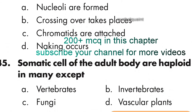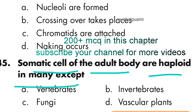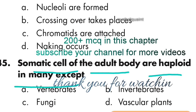Question 45: Somatic cells of the adult body are haploid in many, except fungi — option C is correct. Thank you for watching this video.